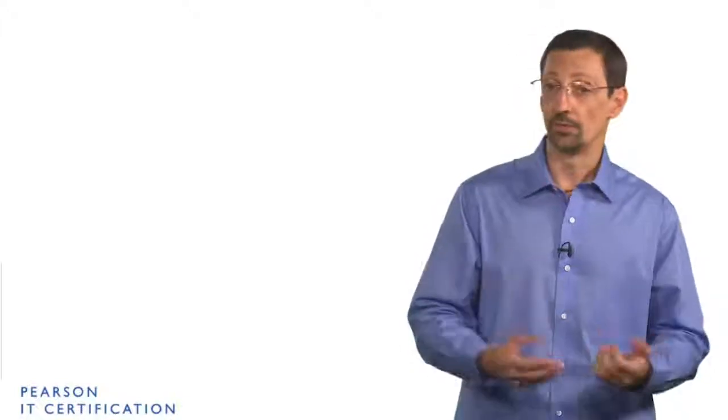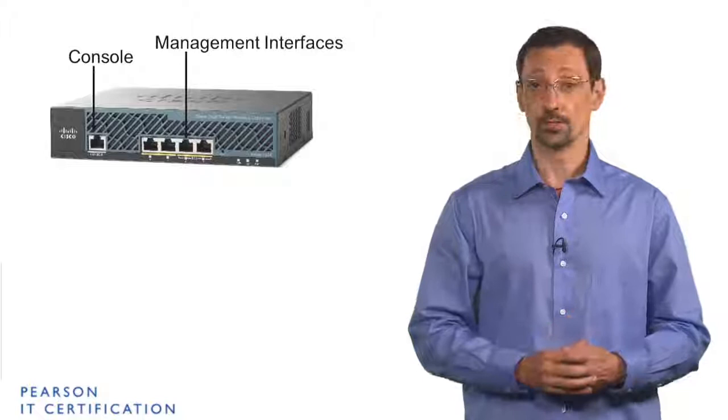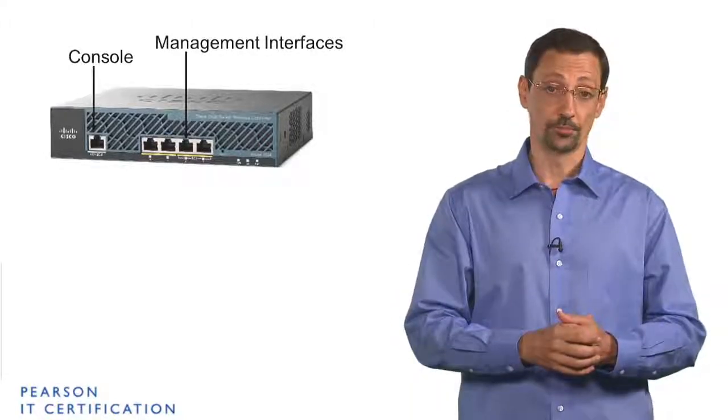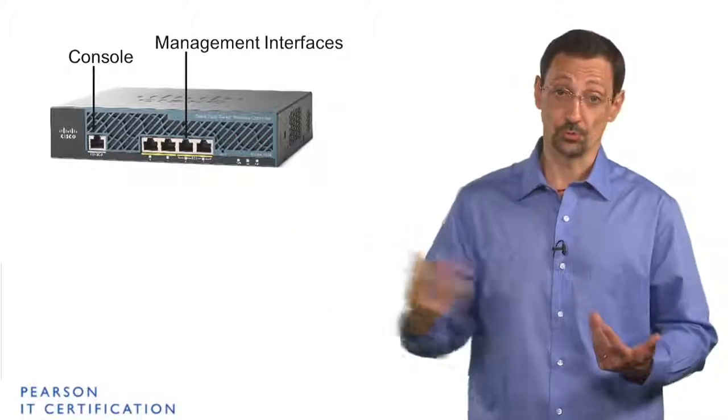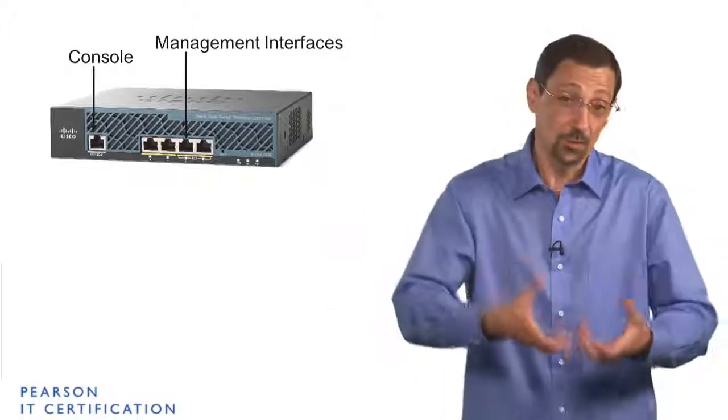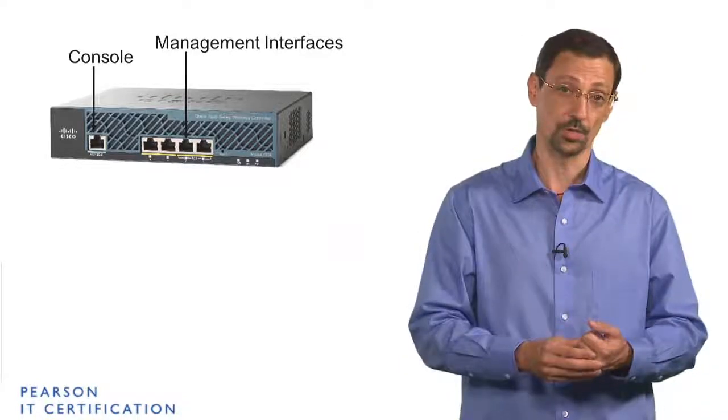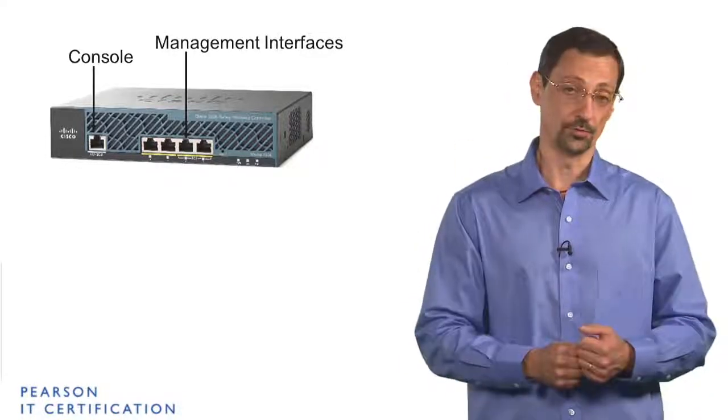But what if you have a smaller controller for smaller environments like the 2504? So this one also has a console port as you can see on the side, so you can still connect and get a CLI connection to the controller. It also has management interfaces less than a 5508 because it's a smaller controller so you'll be controlling less access points, up to 75 on this one. So it has only four of those interfaces.